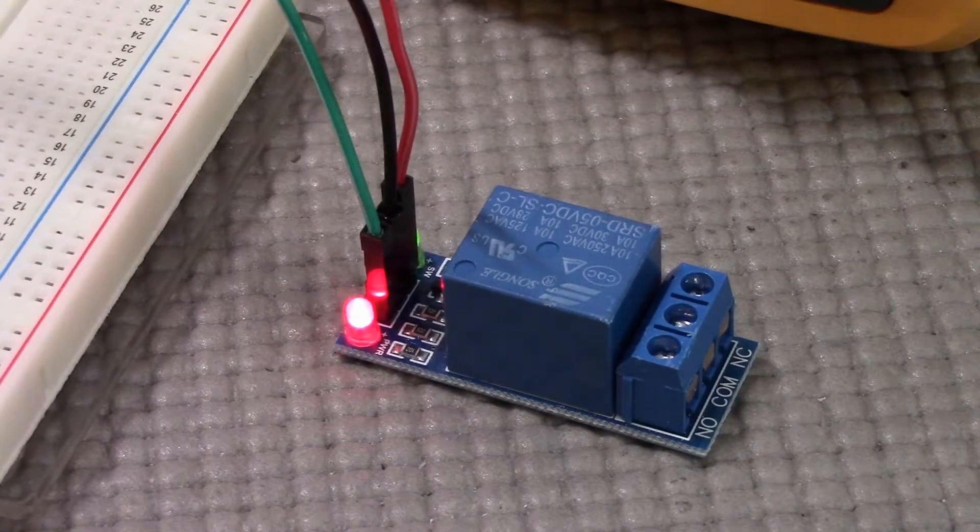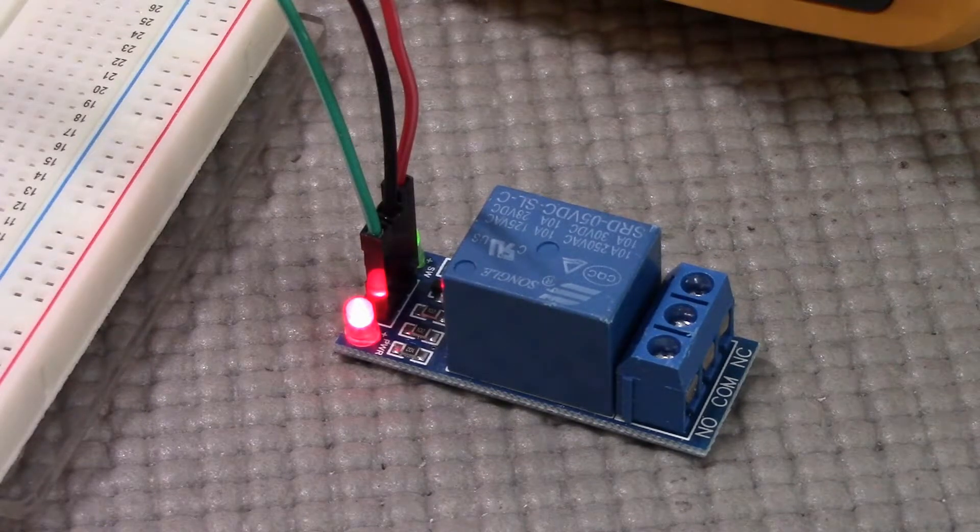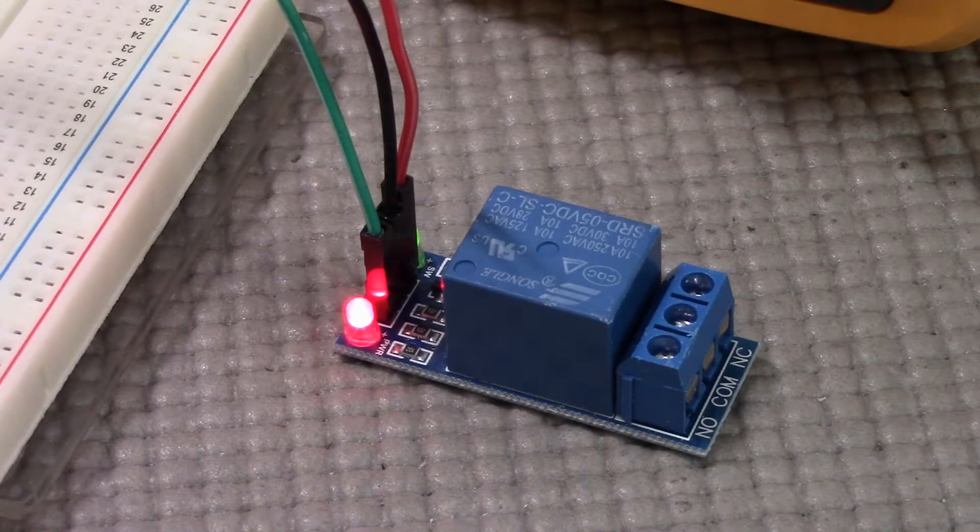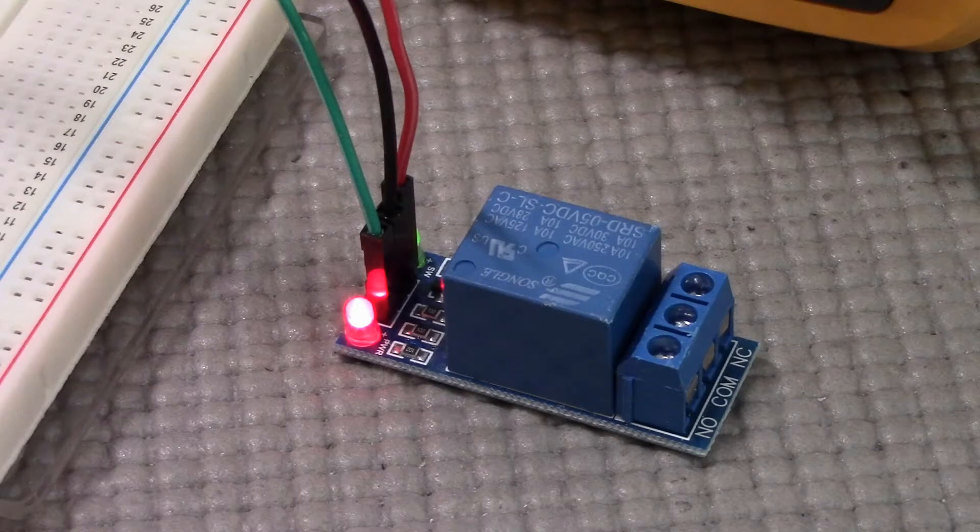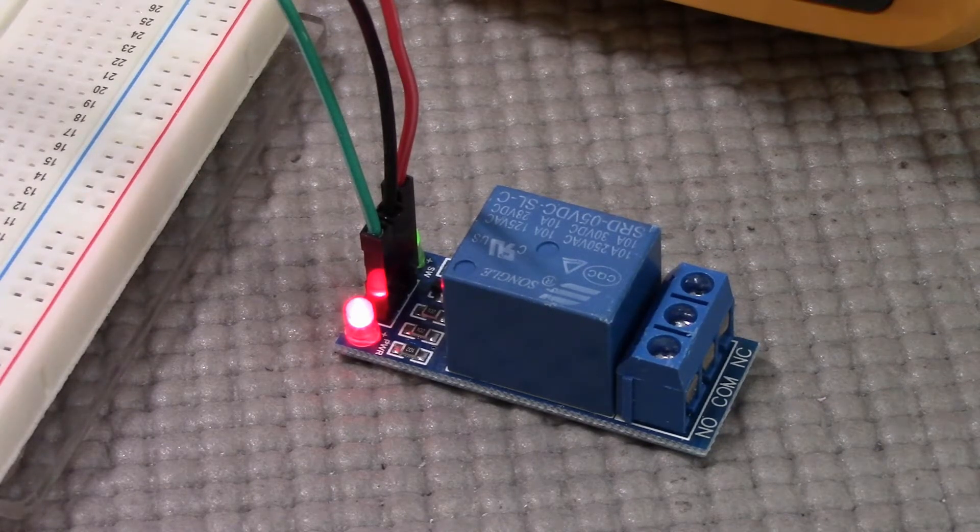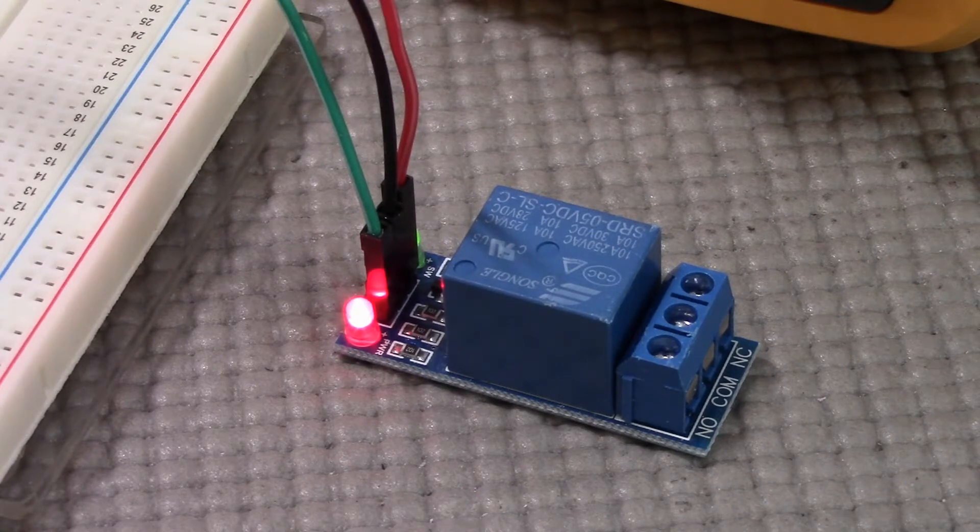Here we connect three wires to the relay: the red wire going to the 5-volt pin on the Arduino, the black wire going to a ground pin on the Arduino, and the green wire going to pin 3, and we set that pin to low.